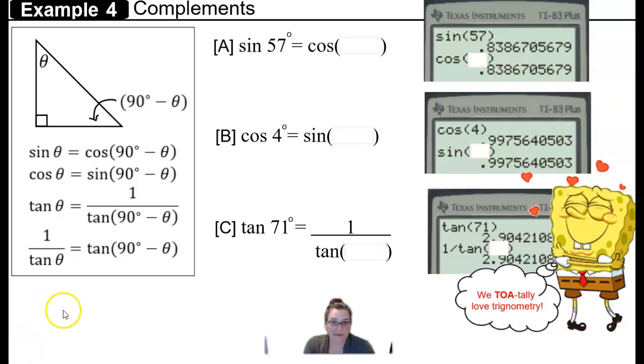Welcome back for example four in our review of triangle trigonometry. Remember in example three, we mentioned that when you know one angle in a right triangle, the other angle that's not the 90 degree angle has to be the complement. To find the complement, we would take 90 minus the angle that we know, so 90 minus theta in this case, since the angle that's labeled is the angle theta.